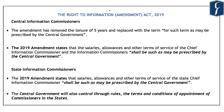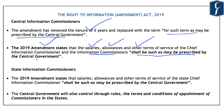The original Act had set the term of the Central Chief Information Commissioner and the Information Commissioners at 5 years or until the age of 65, whichever is earlier. However, this amendment has removed the tenure of 5 years and replaced it with a term for such term as may be prescribed by the Central Government. The original Act also provided that the salaries, allowances, and other terms of service of the Chief Information Commissioner shall be the same as that of the Chief Election Commissioner, and those of an Information Commissioner shall be the same as that of an Election Commissioner. However, the 2019 amendment has said these shall be such as may be prescribed by the Central Government.